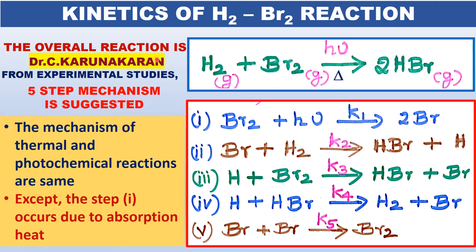Good morning. Let us study today the kinetics of the photochemical reaction between hydrogen and bromine. The reaction between hydrogen and bromine takes place in the presence of light to give HBr gas. The overall photochemical reaction is this.